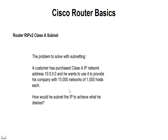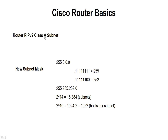How would you achieve this subnetting? Well, let's look at it. The default subnet mask for Class A is 255.0.0.0, so you've got three octets to work with. What we're going to do is take 14 of these bits and apply them to the network, and save 10 for the host. Taking 2 raised to the 14th, we end up with 16,384 subnets — more than the 15,000 needed.